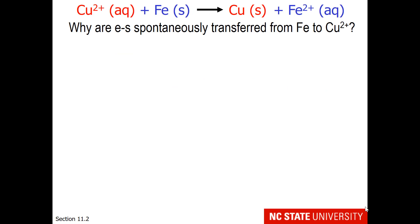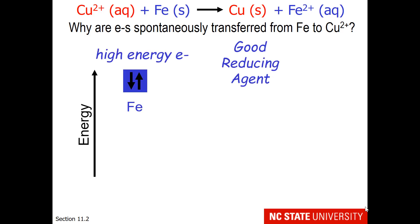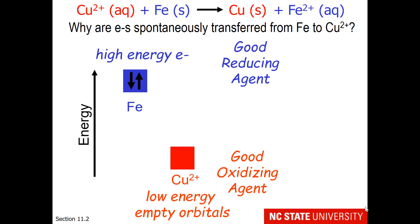So let's go back to our initial introductory reaction, where we had iron in copper 2 sulfate. Why are electrons spontaneously transferred from iron to copper 2 plus? Well, iron has high energy electrons, making it a good reducing agent. Reducing agents give their electrons to another species. On the other hand, copper 2 plus has low energy empty orbitals, making it a good oxidizing agent. Remember that oxidizing agents oxidize something else by taking their electrons. So iron's two electrons are going to spontaneously fall downhill and get closer to the nucleus by belonging to copper 2 plus.